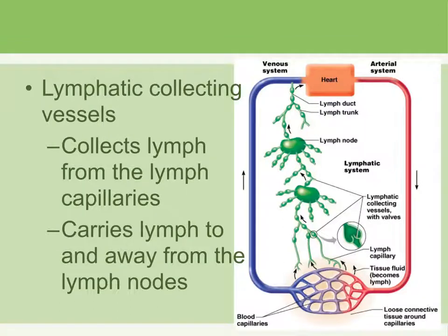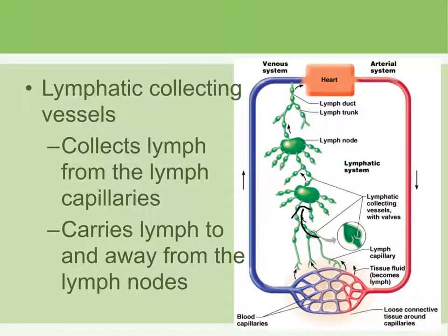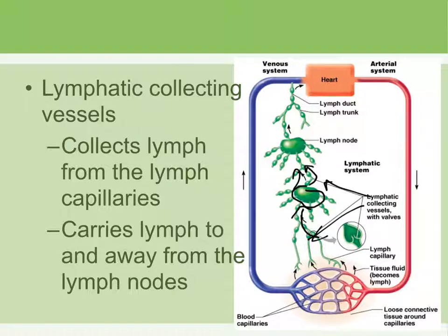Lymphatic collecting vessels collect the lymph from the lymph capillaries. So the order is: lymph capillaries, then lymphatic collecting vessels. The lymphatic collecting vessels then deliver the lymph to the lymph nodes — kidney-shaped or jelly bean-shaped structures. They not only deliver lymph to the lymph nodes but also send lymph away from the lymph nodes, so collecting vessels exist both before and after the lymph nodes.